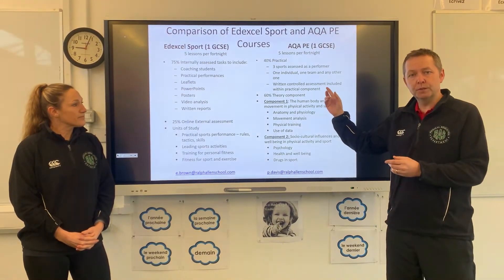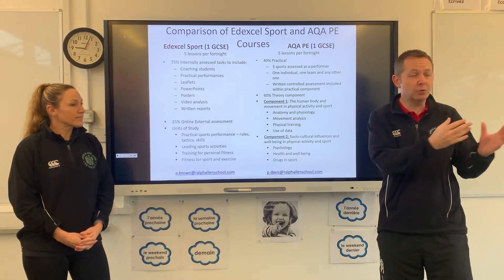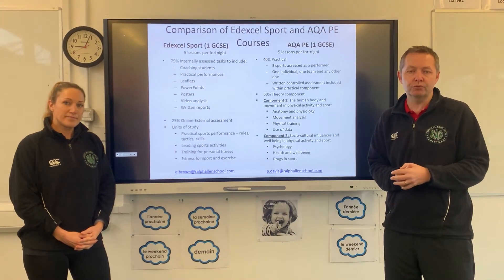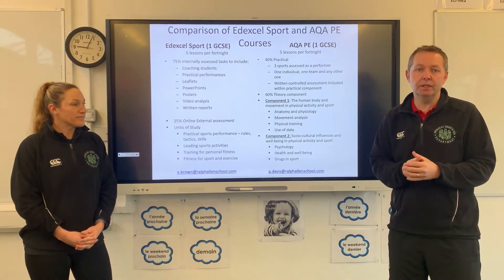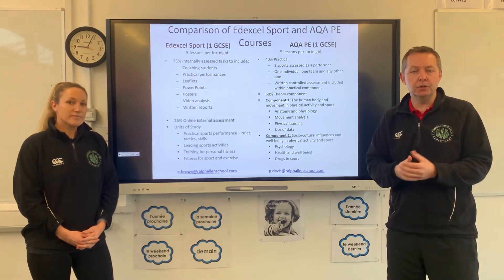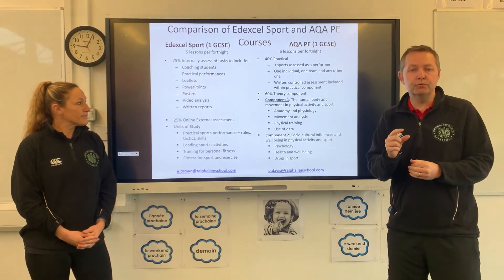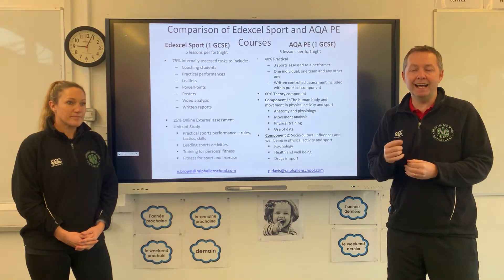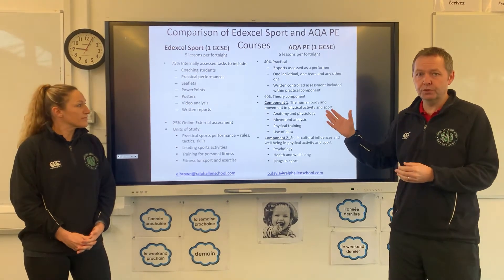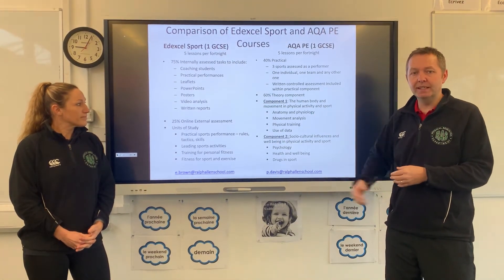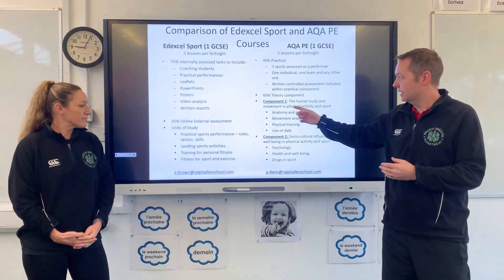For the AQA course, 40% of the overall course is assessed practically. We assess you in three different activities — we'll assess you in as many as we can, but you take forward your best three. One of them has to be a team sport, one can be an individual sport, and then any other one after that. We can advise you from a list to select those activities. You also do a small written piece of coursework within that 40%, where you're analysing your own performance in your best or strongest activity. The rest of the course is assessed in two exams at the end of year 11, so this is an exam-based course. The 60% theory is split between two components.